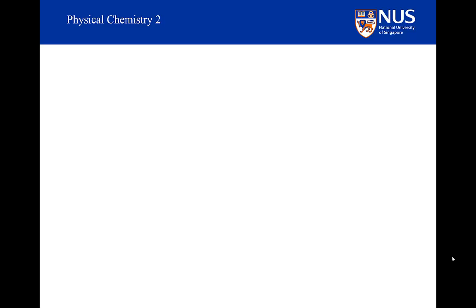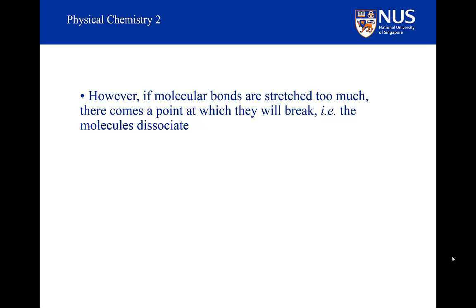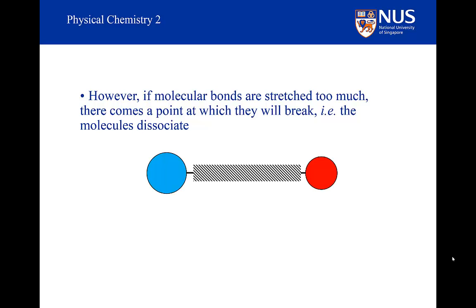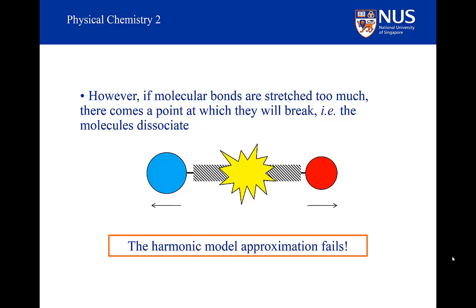So far, we have discussed what is known as the harmonic oscillator. However, there is a problem. If we stretch a real bond too much, it will get to a stage where it breaks and the molecule will dissociate. This basically means that the harmonic model approximation fails. We have seen the real electronic potential energy and we know that it doesn't follow a harmonic potential. A real potential tends to zero as the bond length gets larger and larger, and if we go beyond that level, the bond is broken.